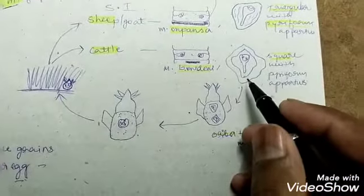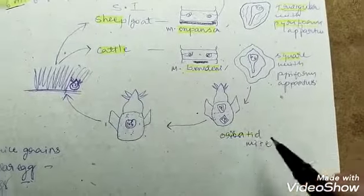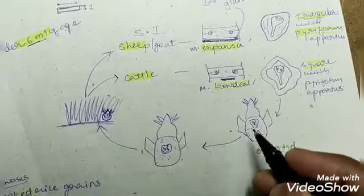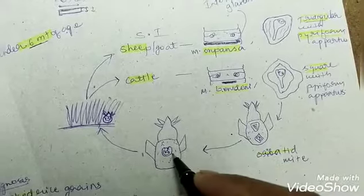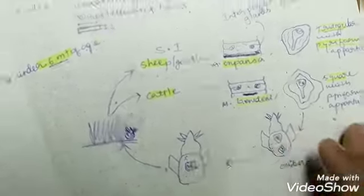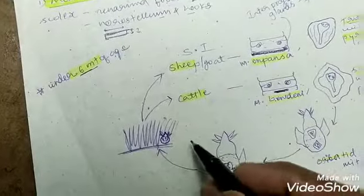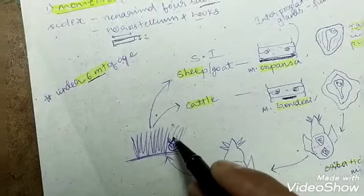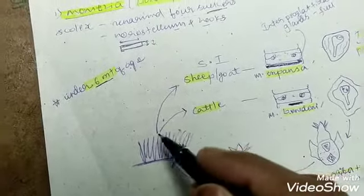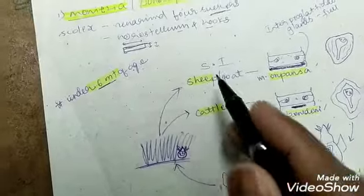The eggs are ingested by the oribatid mite. Then within these, cysticercoides develop. This oribatid mite is present on the environment, on grasses. While grazing, the sheep and goat acquire the infection.